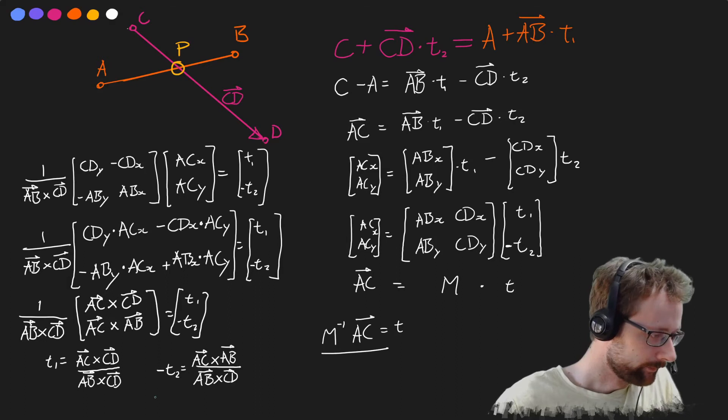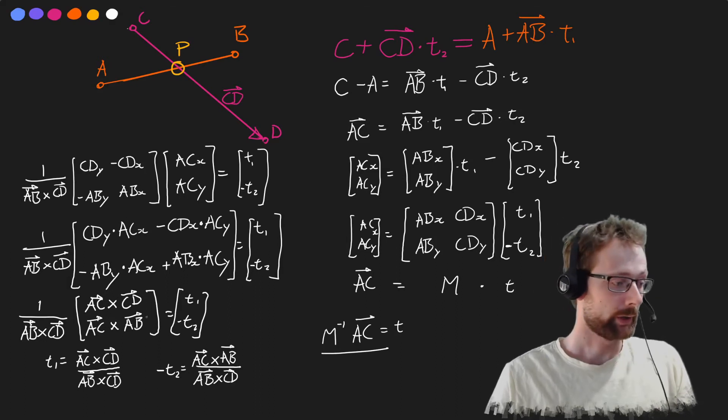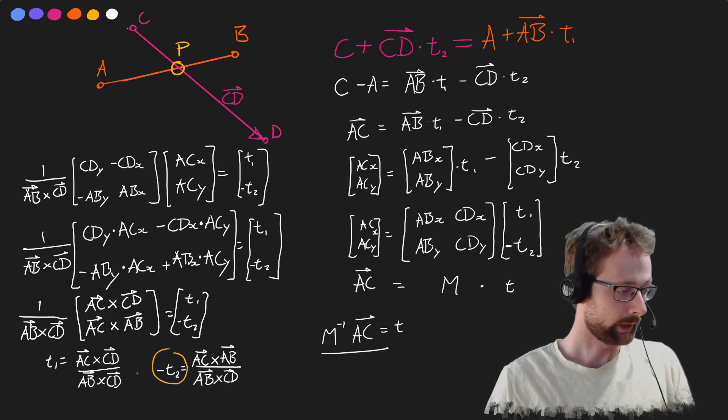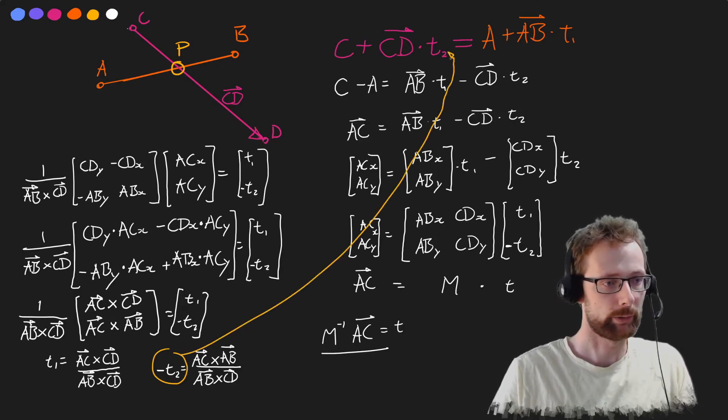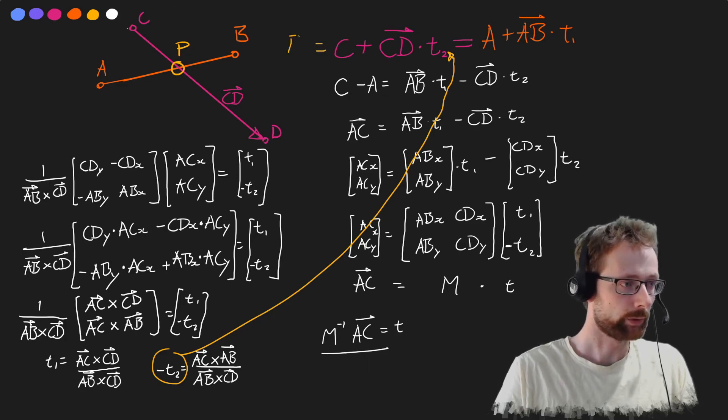I forgot the negative again. So we've pretty much done it. All we have to do is take either one of these say t2 and substitute it up into here and we'll find that that is equal to p.